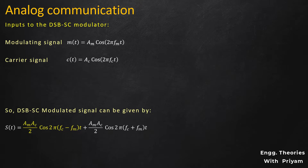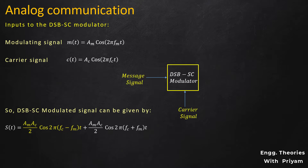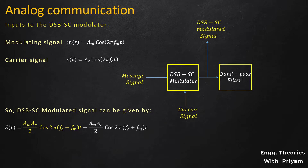The block diagram for the generation of the SSBSC modulated signal shows the DSBSC modulator generating a DSBSC modulated signal, which is given as input to a bandpass filter to generate either the upper sideband or lower sideband SSBSC modulated signal. The bandpass filter allows the upper sideband if the desired output is an upper sideband SSBSC signal, and allows the lower sideband if the desired output is a lower sideband SSBSC signal.